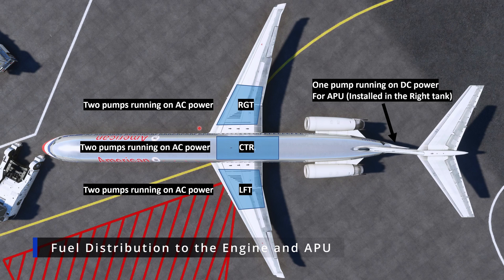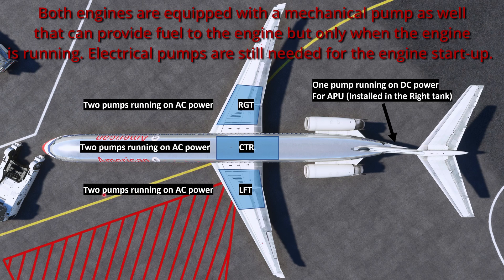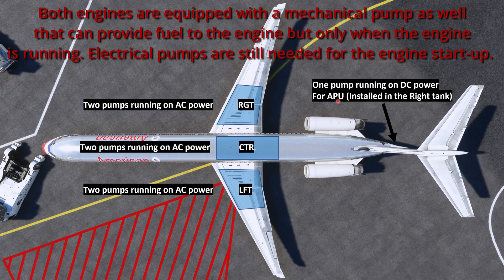For engine fuel distribution, the engines pull fuel from two AC-powered pumps on the left tank, two on the right tank, and two on the center tank. There is also a single DC-powered start pump switch in the cockpit. That DC pump is located inside the right tank and is used for supplying fuel to the APU — the auxiliary power unit at the back of the airplane. So whenever the APU is on, you will be pulling fuel from the right tank.